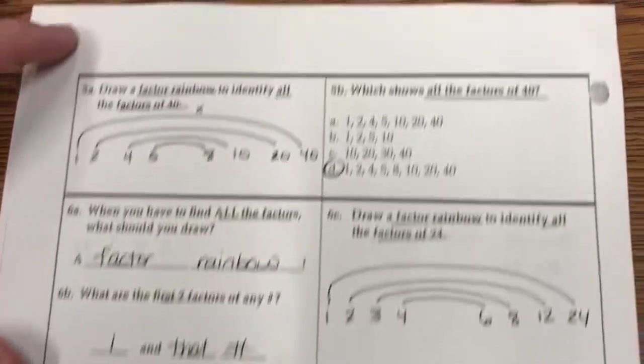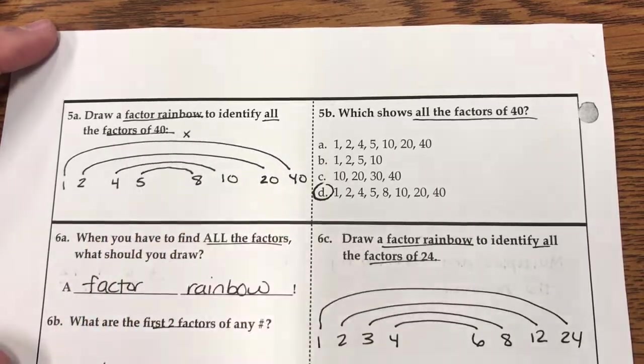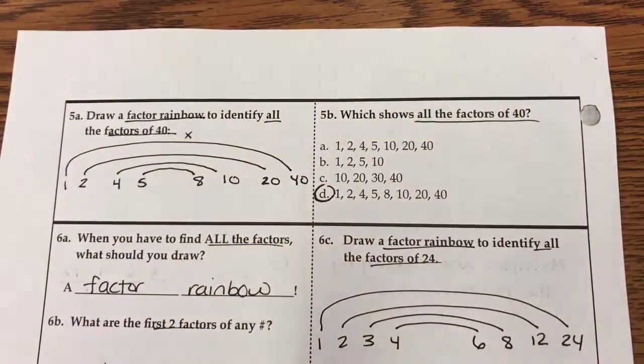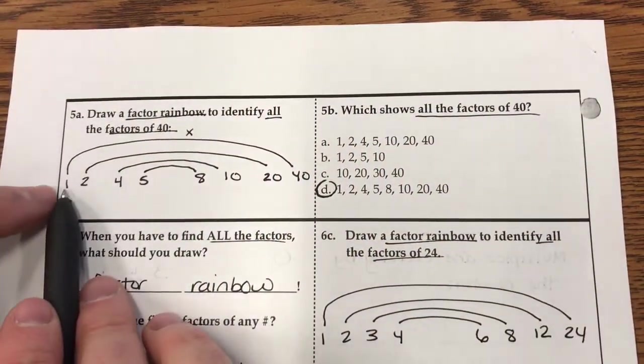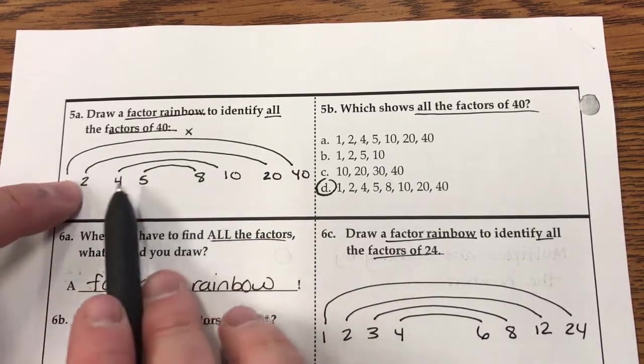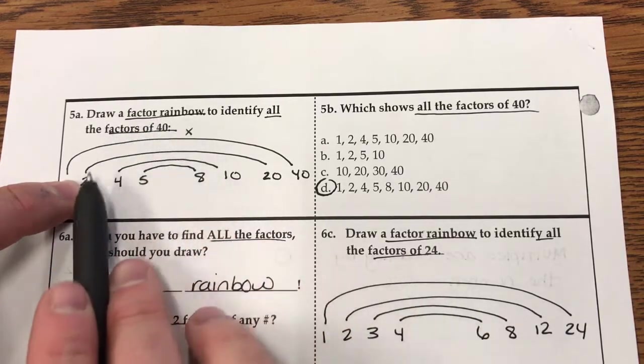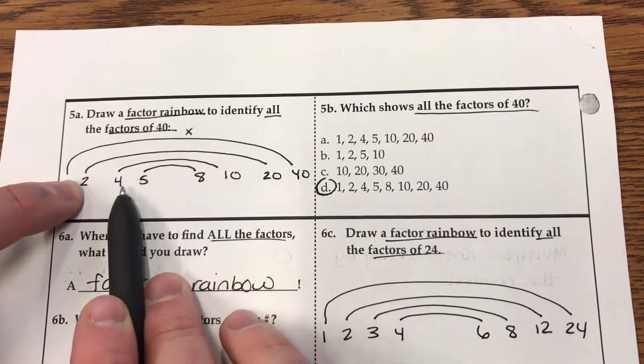All right, on to the back. Draw a factor rainbow to identify all. And when we want to do all, we want to do a factor rainbow. So we start off with 1 and that number, and then we test 2. Then we test 3, which got a decimal.